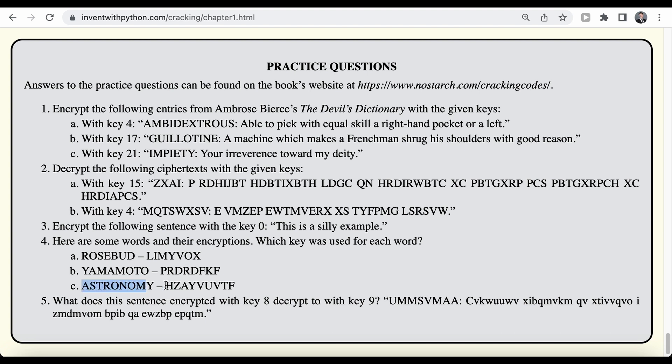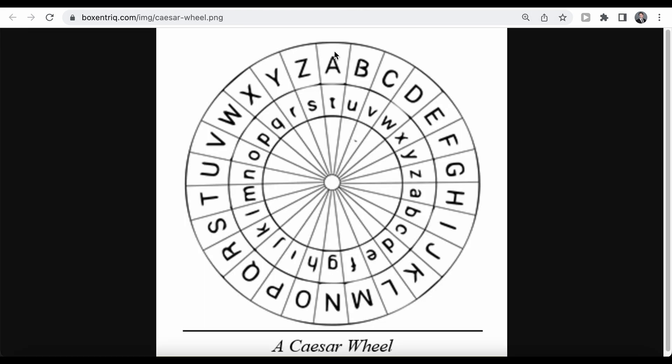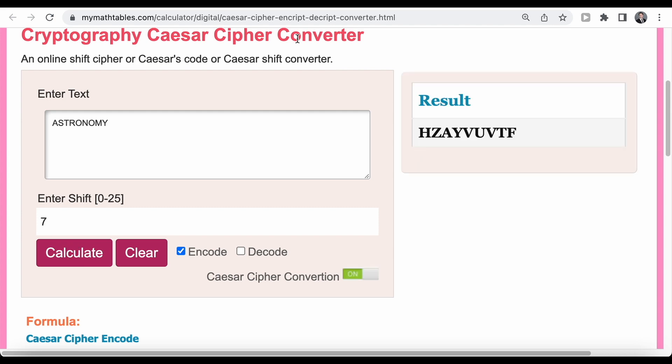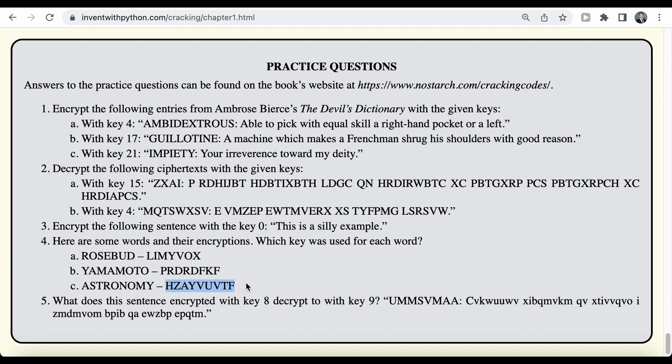And finally, we have the word astronomy, which is turned into this word in cipher text. So we need to switch from A to H. And checking on our cipher wheel, these are 7 characters from A to H. So let's double check in our cipher converter with a key of 7. And we get back this word here, which again of course matches our cipher text.